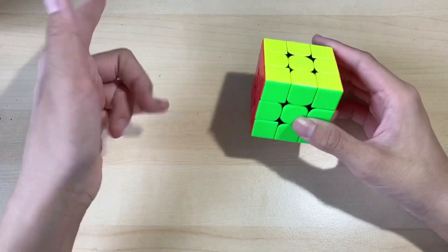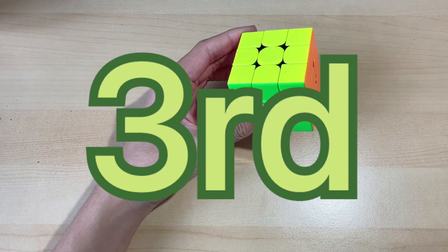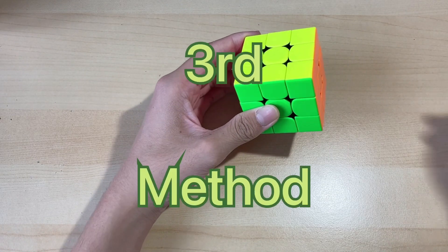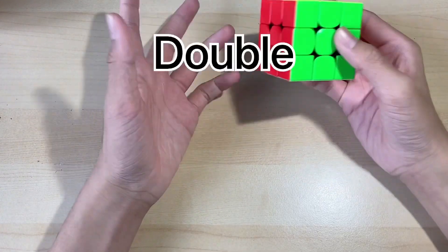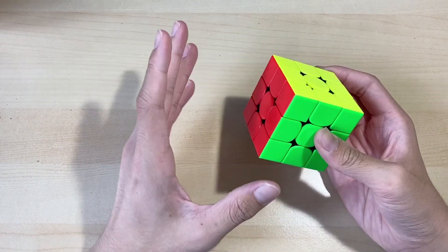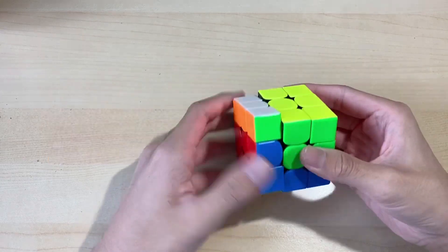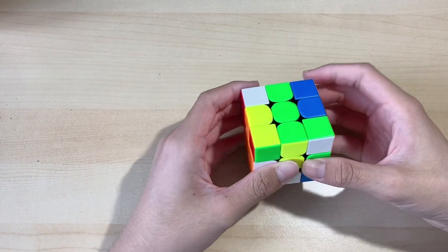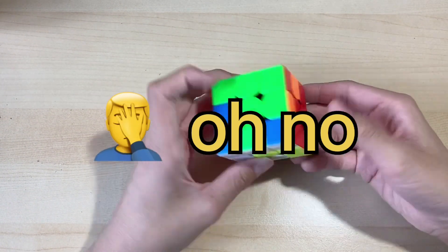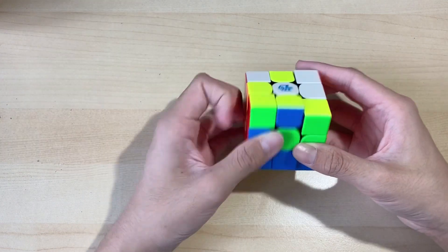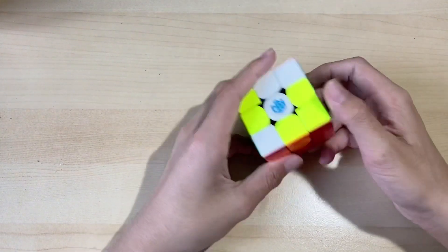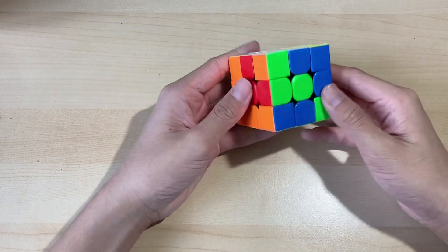Yeah, then we'll use the third method, which is a double move method. Then I will scramble up the cube a bit differently, which is only using double moves. Oh no. Yay. Okay, okay, it's scrambled up. Then I will do the...